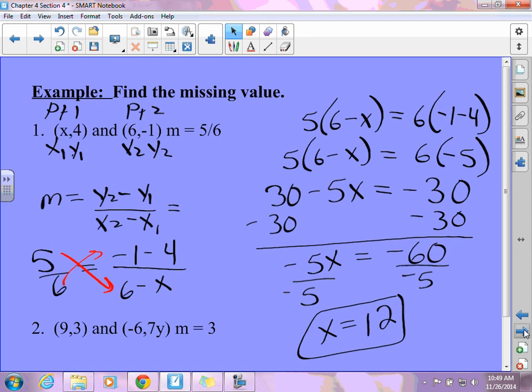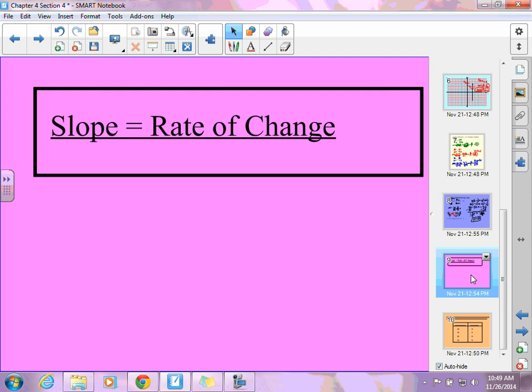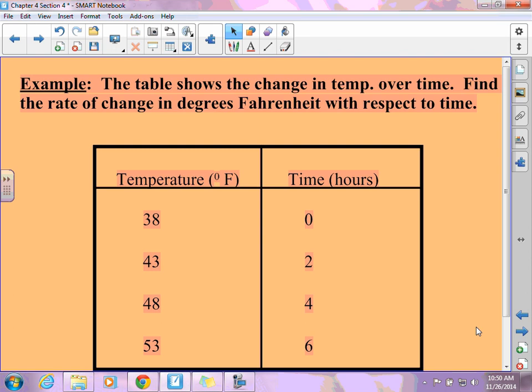Notice that slope and rate of change are the same thing. And let's look at this problem. The table shows the change in temperature over time. This is key. Temperature over time. Find the rate of change in degrees Fahrenheit with respect to time. Help me out. If it's temperature over time, which one is my X, temperature or time? Temperature is going to be my Y and time is going to be my X. Because remember, it's rise over run. My Y goes first. So when you do these, pick two ordered pairs. It doesn't matter which two you choose because the slope will still work.